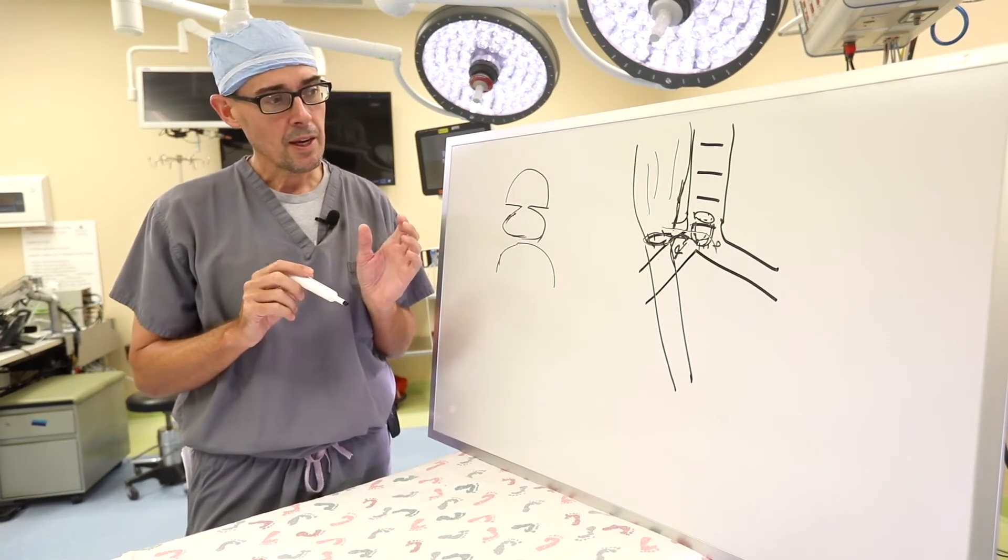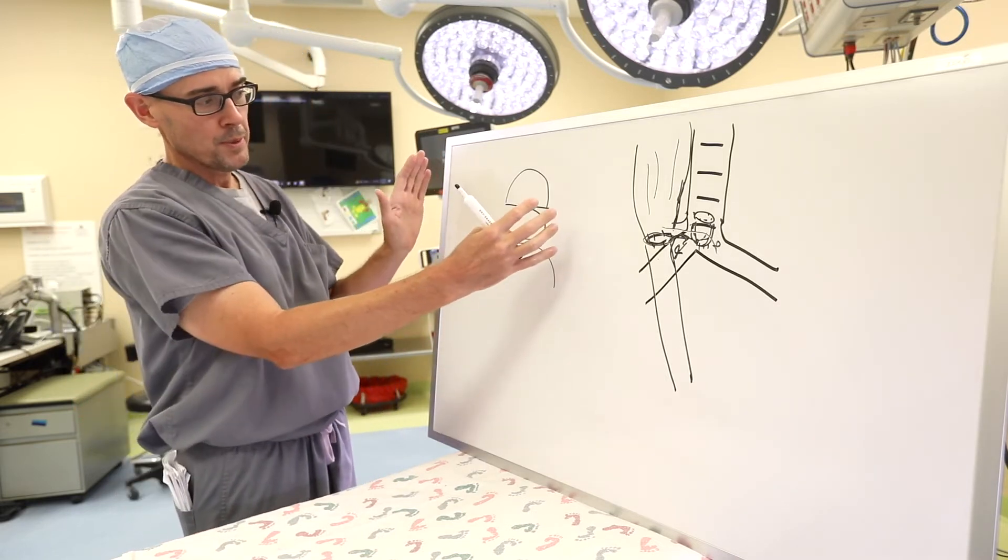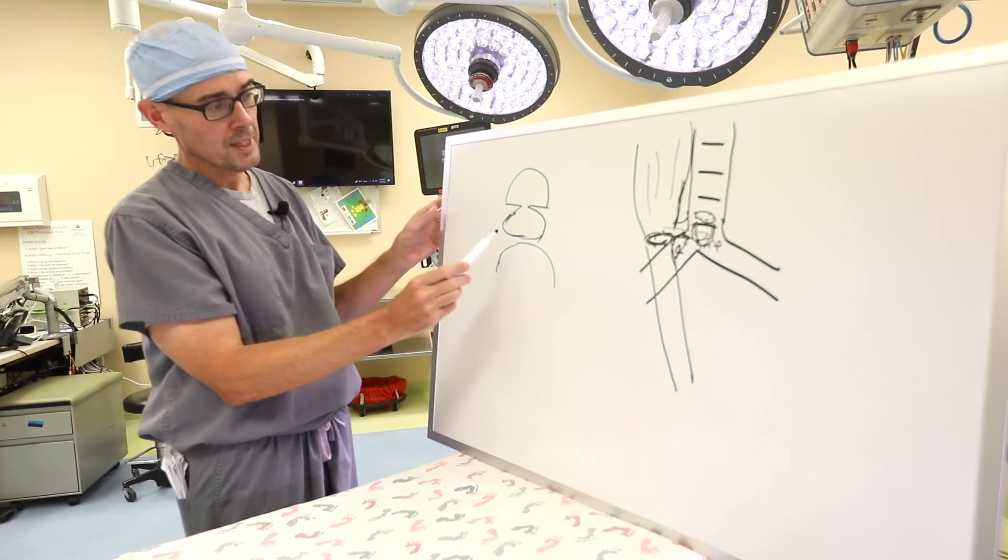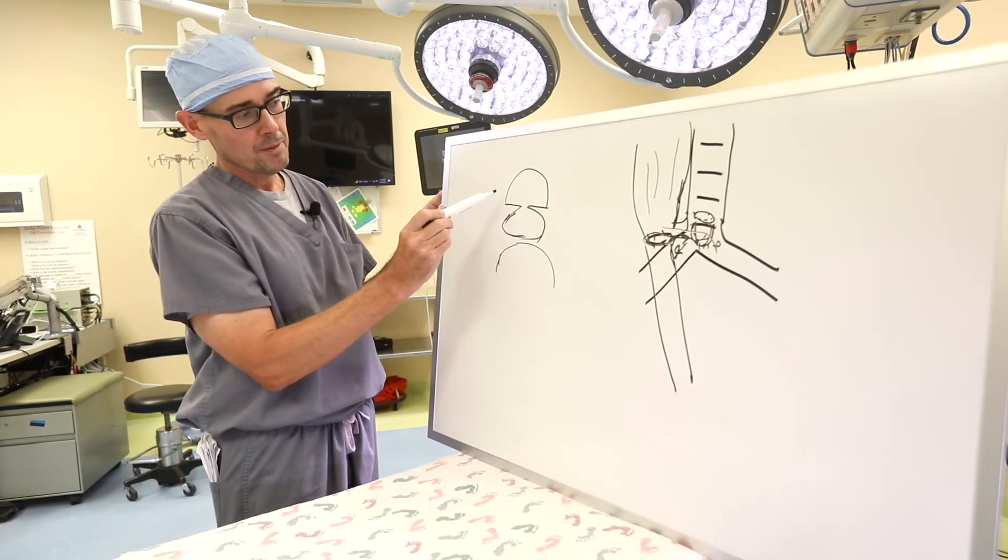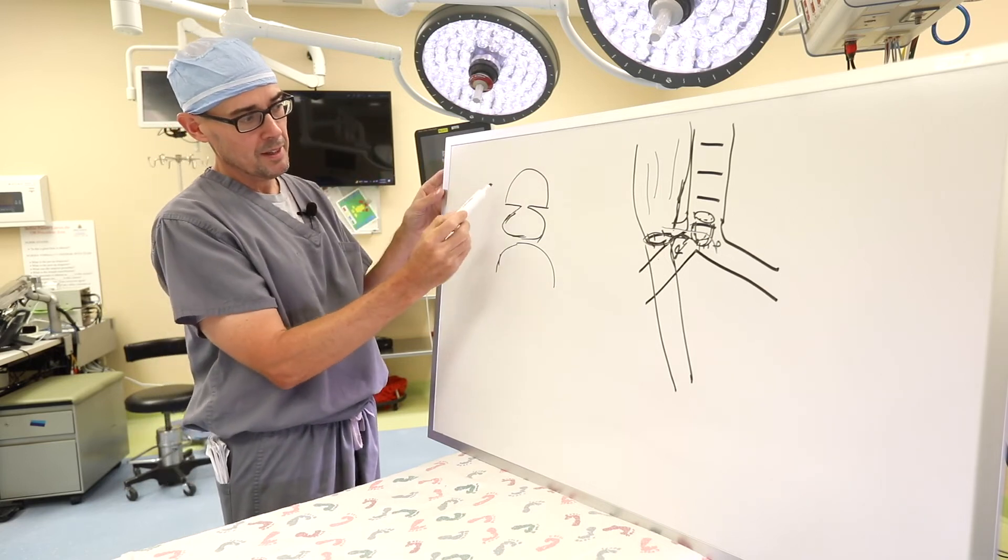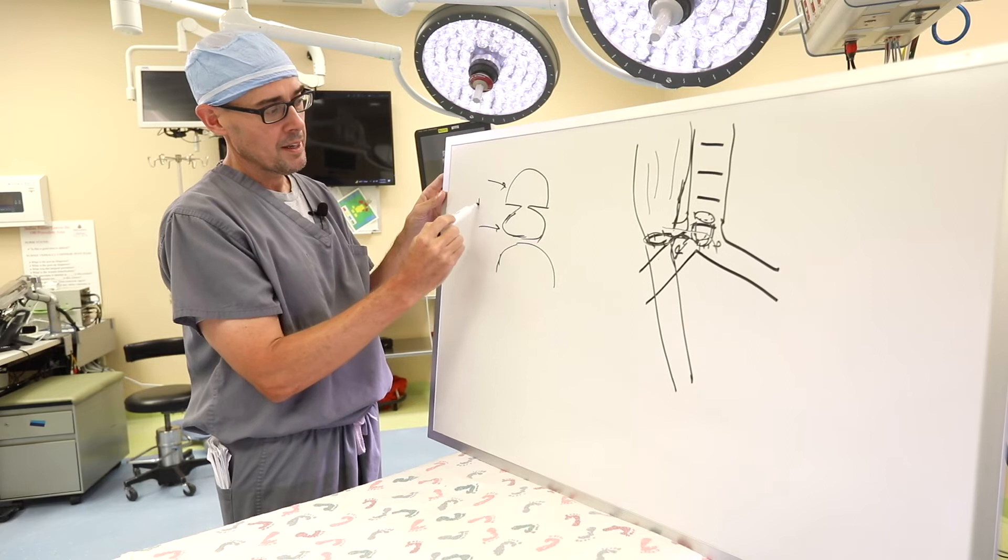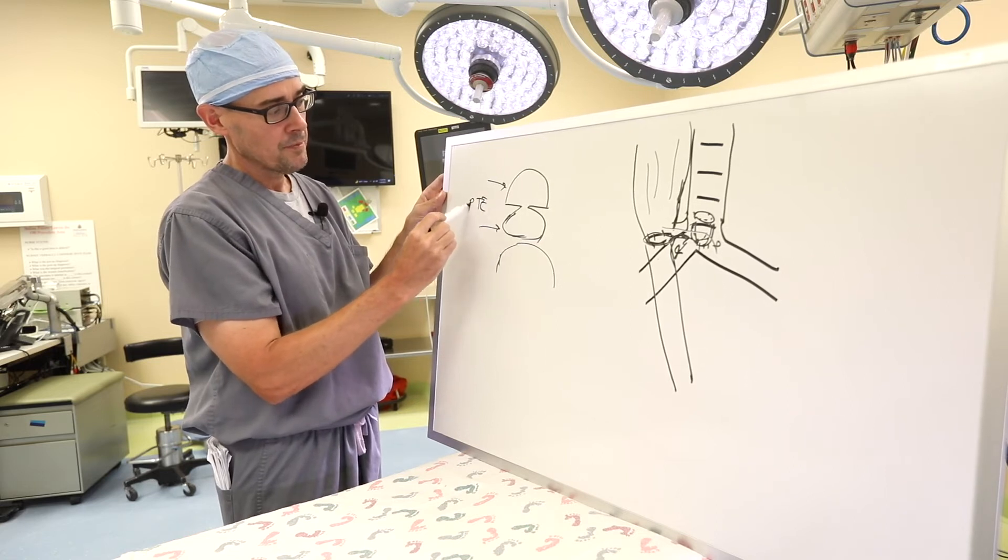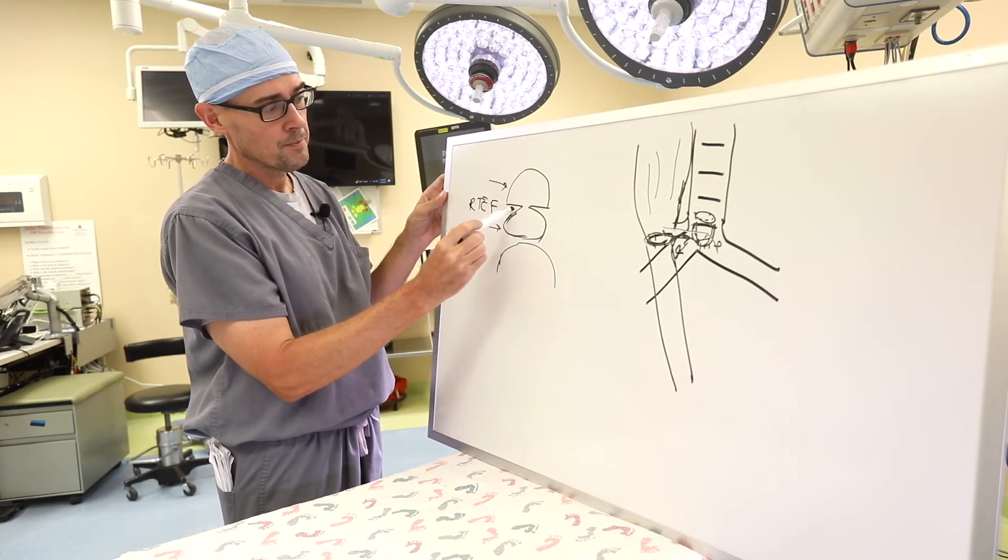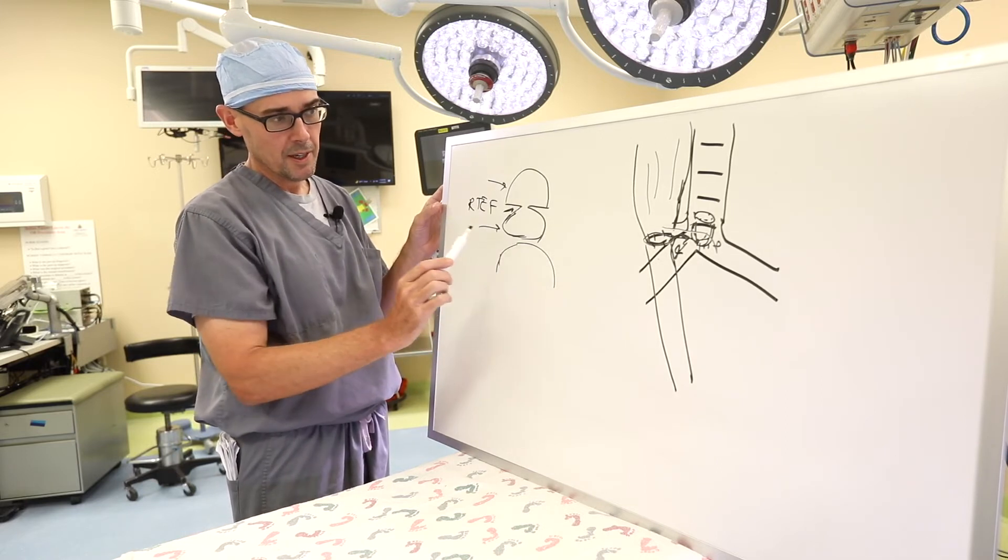And so how that works, this would be like a cross sectional view of this same problem. So this would be like you're looking down the barrel of the trachea and esophagus. So this would be the trachea and the esophagus. And this is the recurrent TEF here. And right behind the esophagus is the spine.